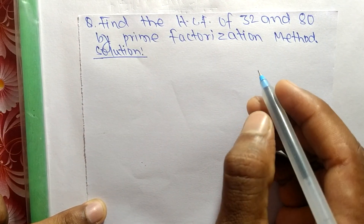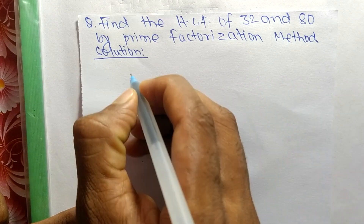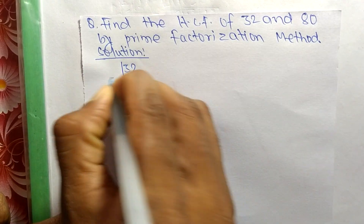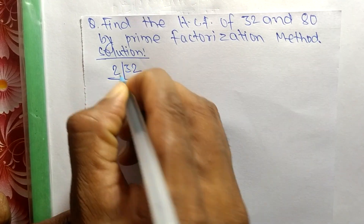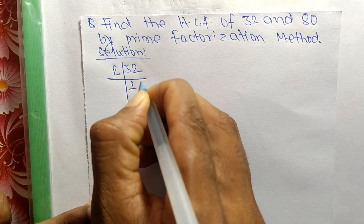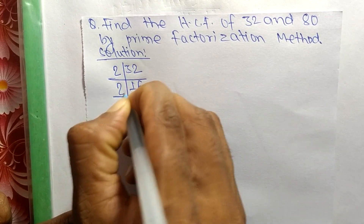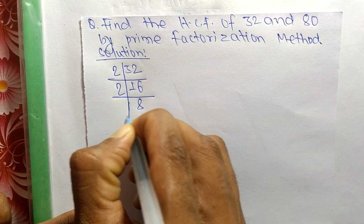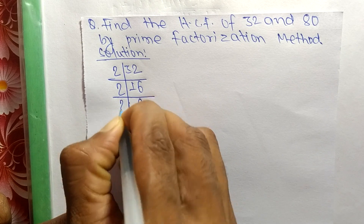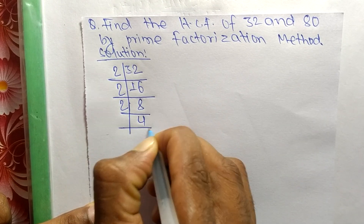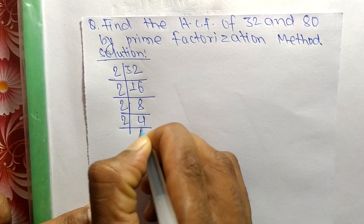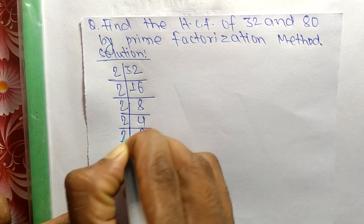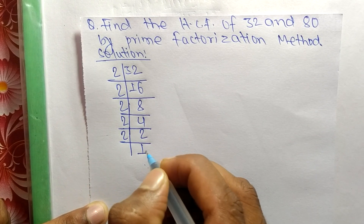First we find out the prime factors of 32. So it is 2 times 16 equals 32, 2 times 8 equals 16, 2 times 4 equals 8, 2 times 2 equals 4, and 2 times 1 equals 2.